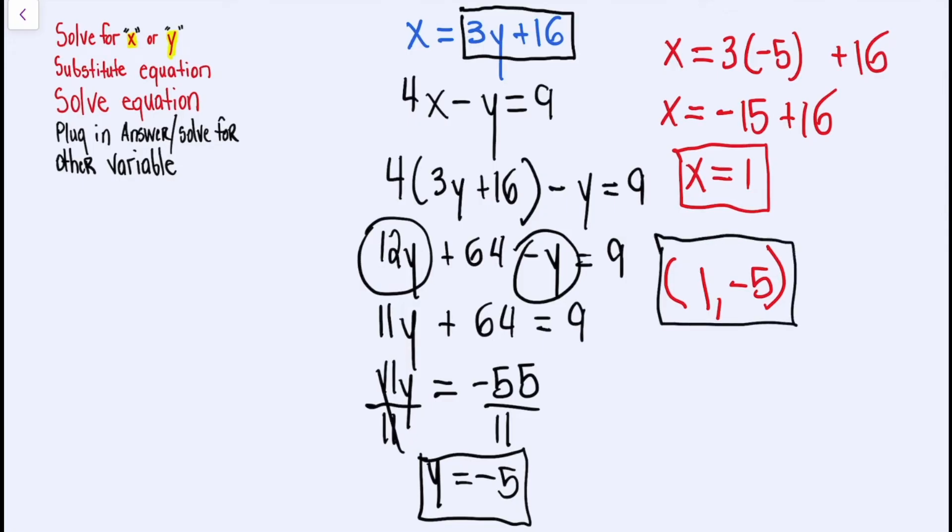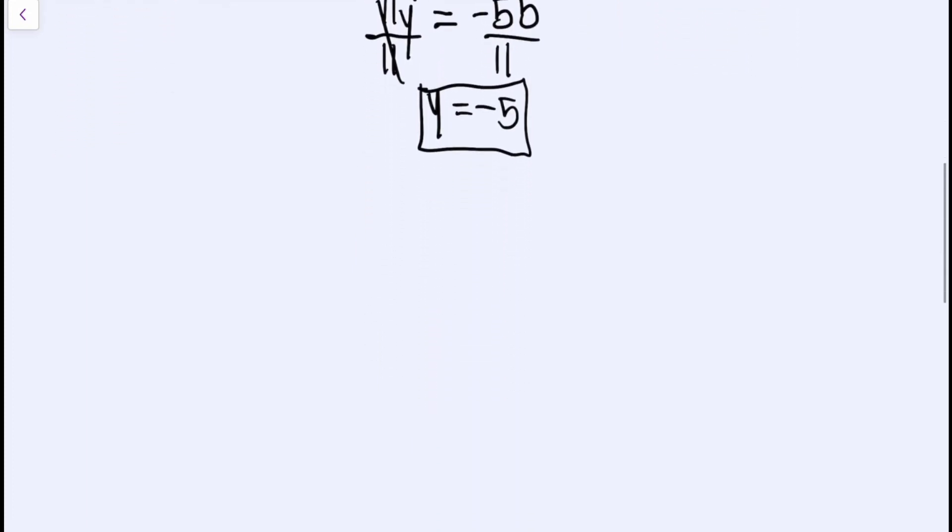In our second example, we're going to look at equations where they did not solve for any of the variables. So let's write this out. This is equation number one. And then we're going to switch colors and do equation number two, which is 10X...